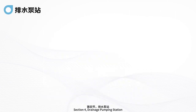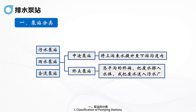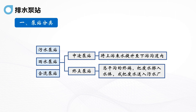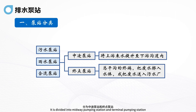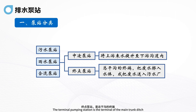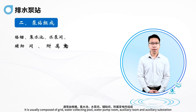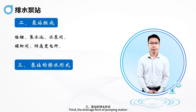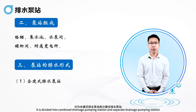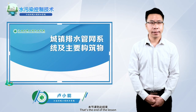Section 4: Drainage pumping station. Classification of pumping stations: first, by function — sewage pumping station, rainwater pumping station, and confluence pumping station. Second, by location — midway pumping station and terminal pumping station. The midway pumping station lifts upstream incoming water into the downstream channel. The terminal pumping station is at the end of the main trunk ditch, discharging wastewater into the water body or sending wastewater to the sewage plant. Composition of pumping station: usually composed of grid, water collecting pool, water pump room, auxiliary room, and auxiliary substation. Drainage forms: divided into combined drainage pumping station and separate drainage pumping station. That's the end of the lesson. Thank you all.